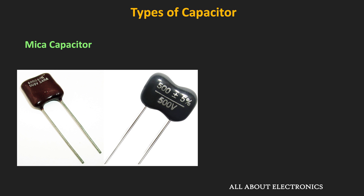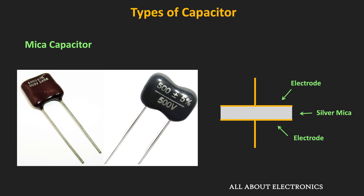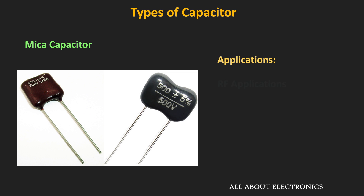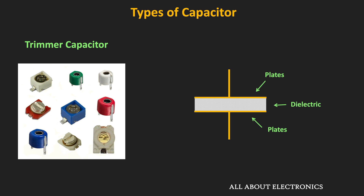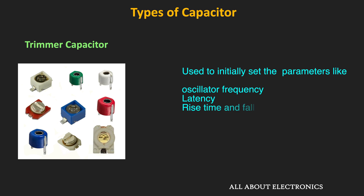The next type is the mica capacitor, where silver mica is used as the dielectric material. These capacitors are very accurate and provide good temperature stability, making them suitable for RF applications. Due to their higher breakdown voltage, they are also used in high voltage applications. However, because of their large size and high cost, they are now replaced by other capacitors. The trimmer capacitor is a type of variable capacitor used for initial calibration of equipment during manufacturing or servicing. By changing the distance between plates or the overlapping area, the capacitance can be varied. They are used to initially set oscillator frequency and other parameters like latency and rise/fall time.